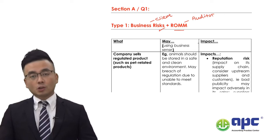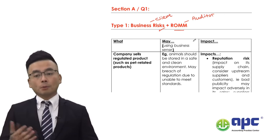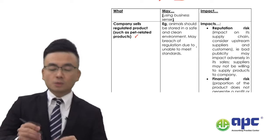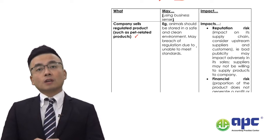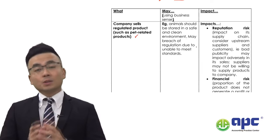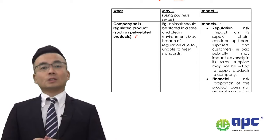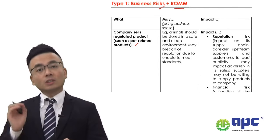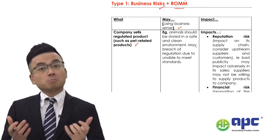In answering the business risk question, there will always be two marks per point. For each point that you write, you can summarise what the case information said — you could directly copy and paste the case information, but I would summarise it in my own words to make sure the answer is not just a copy-and-paste exercise. Then you need to tell the examining team why this would be the business risk.